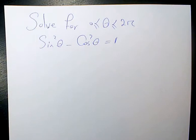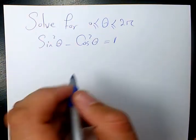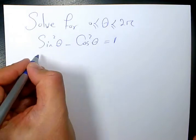In this video, I want to show you how to solve sin²θ - cos²θ = 1. If you remember in trigonometric identities, sin²θ + cos²θ = 1.